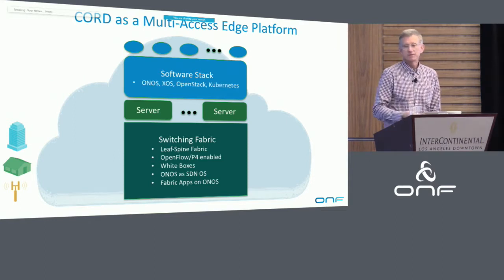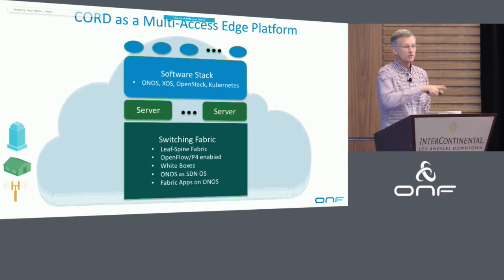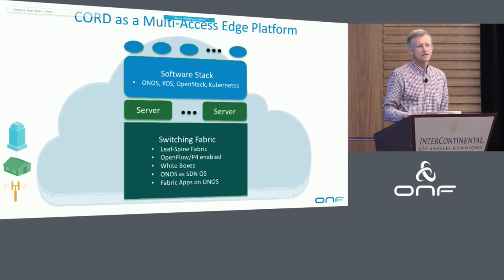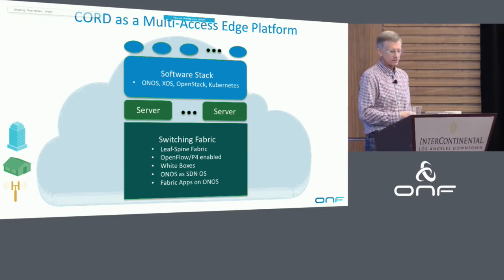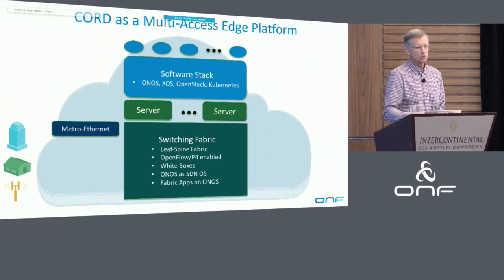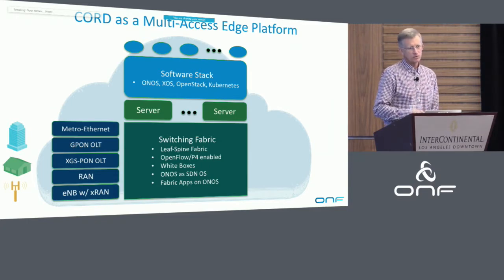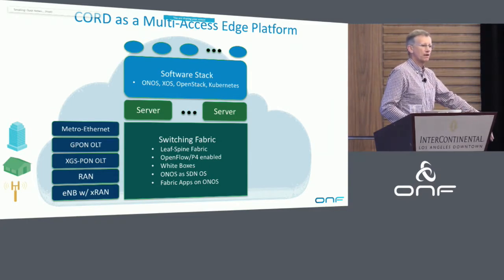On the service stack that runs on top of it, some of these we're going to be pulling in from elsewhere, like Kubernetes and OpenStack. Some of them are going to be components pulled in from ONF projects as an exemplar — XOS and ONOS are examples of that. So this collectively is a multi-access edge platform, multi-access as soon as you start populating it with multi-access technology. I can attach Metro Ethernet access devices, GPON or XGSPON for the wireline case, and I can bring in RAN enabled with XRAN. Those are all examples of technologies I can plug into that shared multi-access platform.